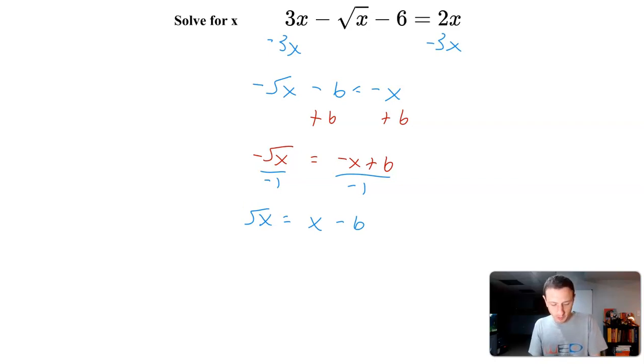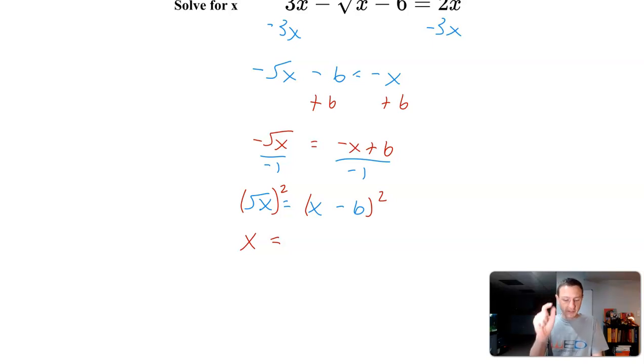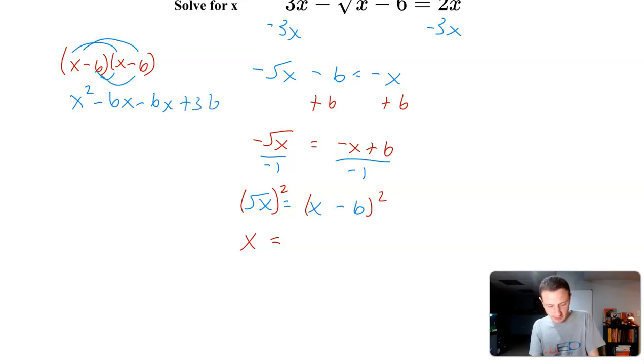I'm going to square both sides, so I'm left with x equals x minus 6 squared. Let's work that out. I'll distribute twice: x squared minus 6x, negative 6 times x is negative 6x, negative 6 times negative 6 is positive 36. So we get x squared minus 12x plus 36. So we get x equals x squared minus 12x plus 36.